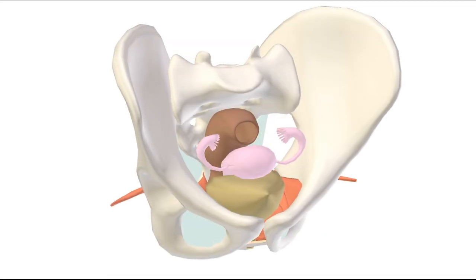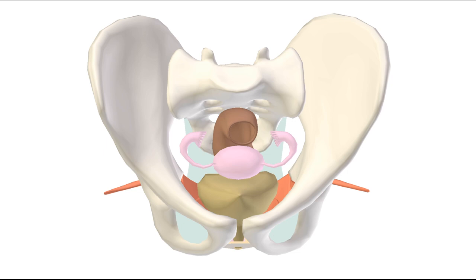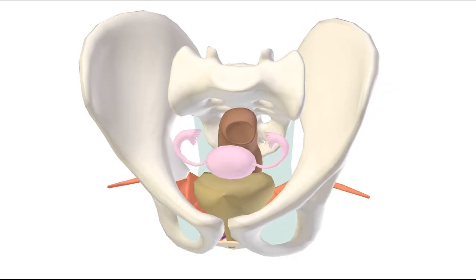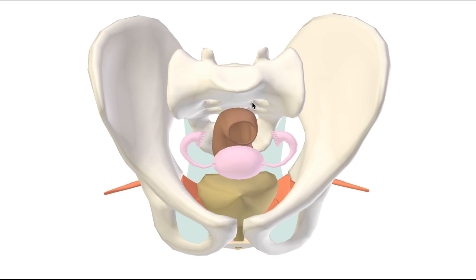In order to appreciate better the space that is the ischioanal fossa, let's first get our bearings. So here we have the pelvis, which I'm going to make a sagittal cut through.